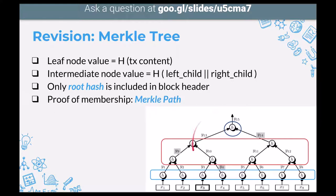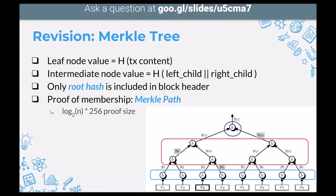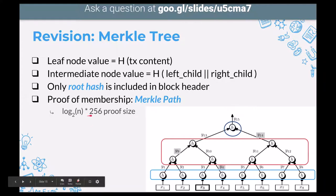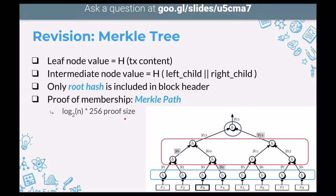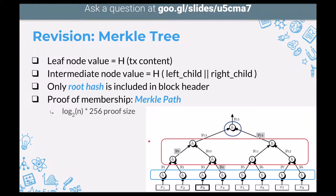This path from bottom to top is called a Merkle path or Merkle proof. The proof size is much shorter than including all transactions — it's O(log n) times 256 bits, where 256 bits is the length of each digest and log n is the height of the tree. For example, if you have three layers, you have 2^3 = 8 nodes. The proof size does not grow exponentially or even linearly with the number of transactions.